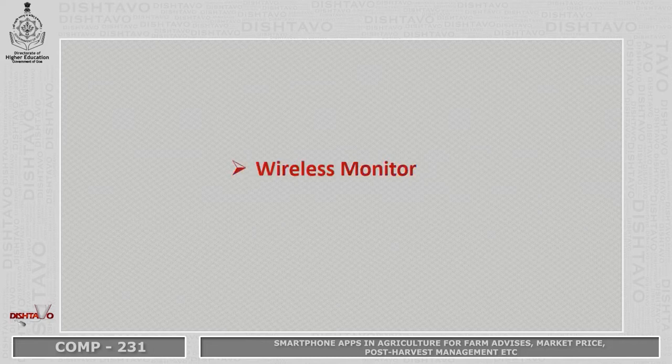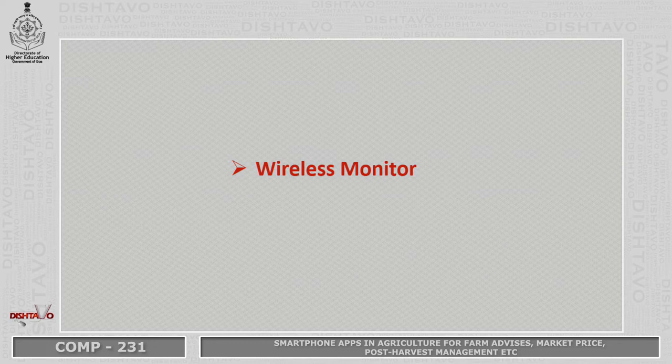Wireless monitoring: this kind of application does not require any wired system to analyze what the typical requirements in the field are. Based on the information the farmer provides, the application itself does an analysis and provides the information. So it is considered as wireless monitoring over a smart application system.